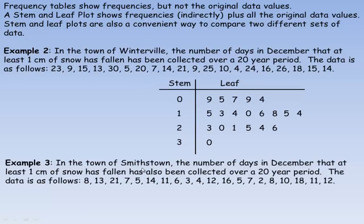In example three, in the town of Smithstown, the same kind of data as in example two has been collected over a twenty year period. This is what I mean by it's a good way to compare two sets of similar data. We extend this over to the other side. For the eight here, we will put an eight. Thirteen (three there), twenty-one, then a seven, then a five, fourteen, eleven, six, three, four, twelve, sixteen, five, seven and two, eight, ten, eighteen, eleven, and twelve.